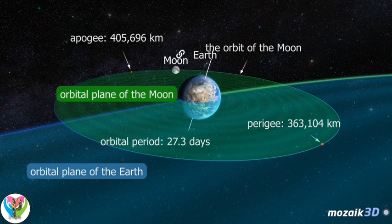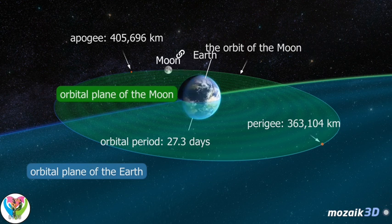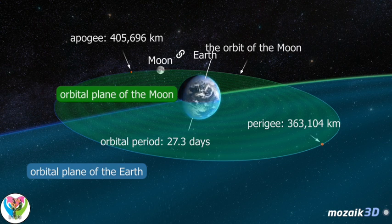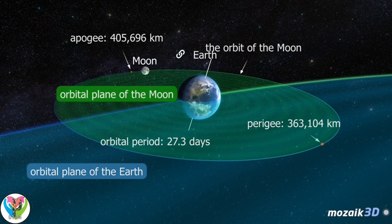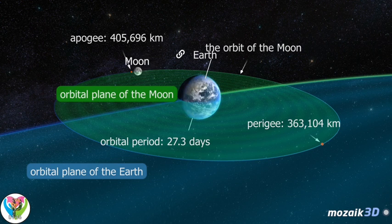Its orbital period is 27.32 days, while the lunar phase period, from full Moon until the next full Moon, is 29.53 days.